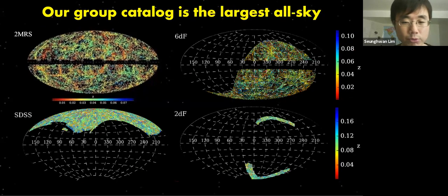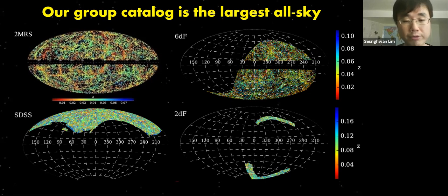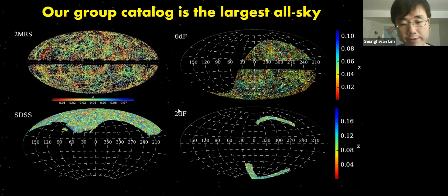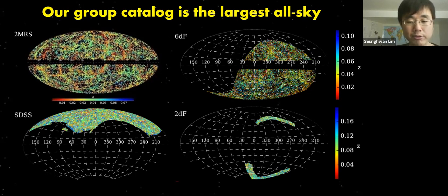Here are the group catalogs we constructed. We first used the 2MRS — the 2MASS Redshift Survey — which is a largely UMass-driven survey, to construct an all-sky group catalog. We also added 6dF, SDSS, and 2dF to go a little deeper in particular directions of the sky whenever additional data are available. To my knowledge, this is still one of the largest all-sky galaxy group catalogs.